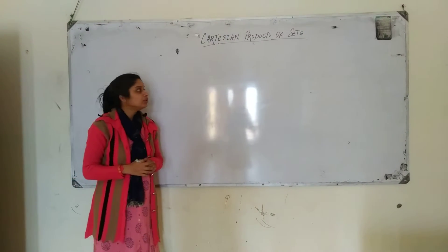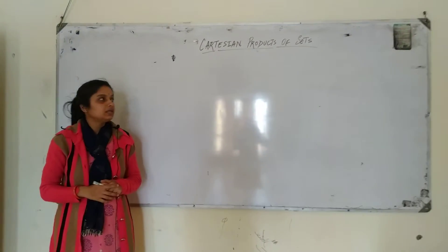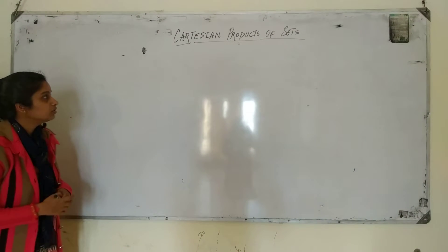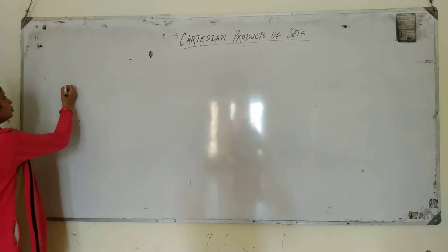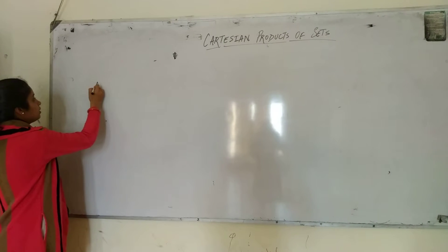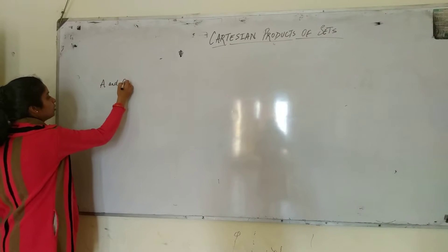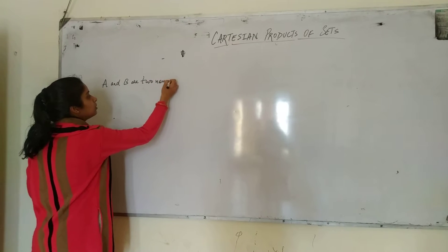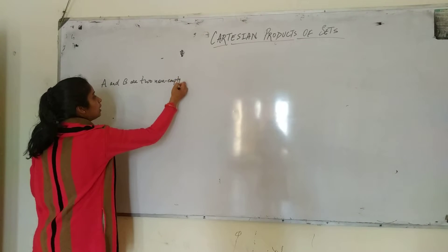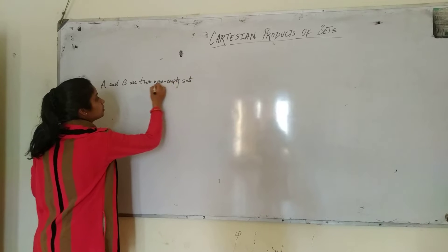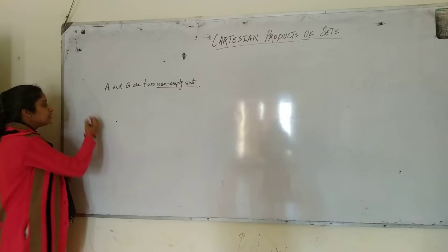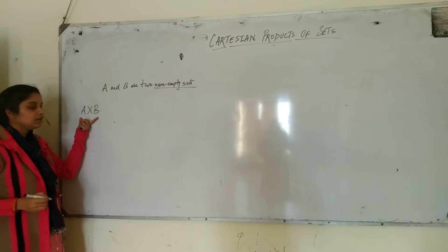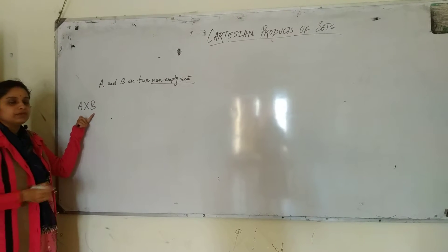Hello everyone. Today we are going to start a new topic: Cartesian products of sets. If we have two sets — let A and B be two non-empty sets — then the Cartesian product of A and B is represented by A cross B.